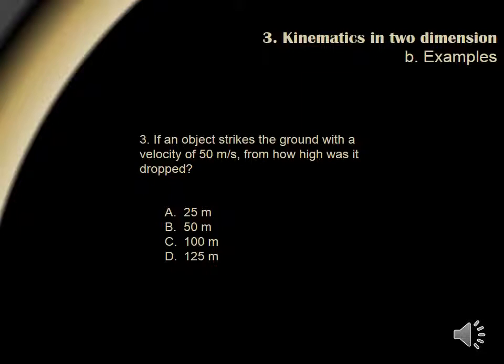Question 3. If an object strikes the ground with a velocity of 50 meters per second, from how high was it dropped? Here, we are given velocity, we know acceleration, and we are asked to calculate distance or height. Since time is not mentioned, we use the second kinematic equation, or v equals root 2 ax. Plugging in 10 for the acceleration and 50 for the velocity, we come up with 125 for our distance, or height.